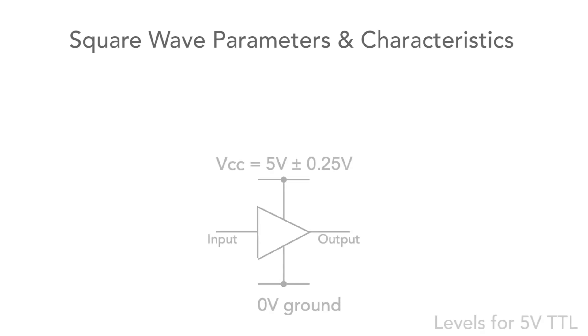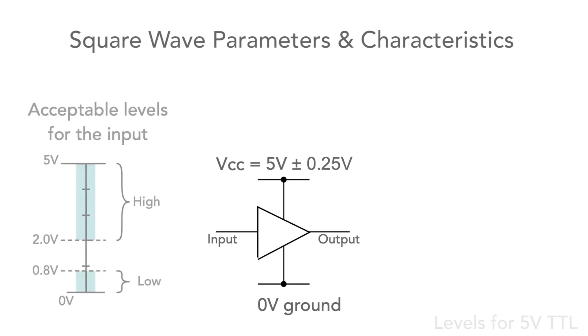For example, on the old transistor transistor logic or TTL schemes using a 5 volt supply line, the voltage for the input of a logic element needed to fall between 0 and 0.8 volts for the low state and between 2 and 5 volts for the high state.